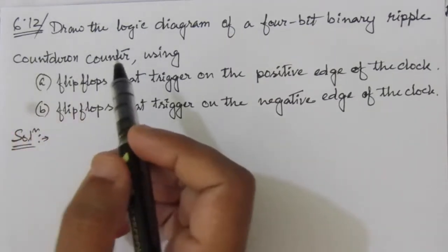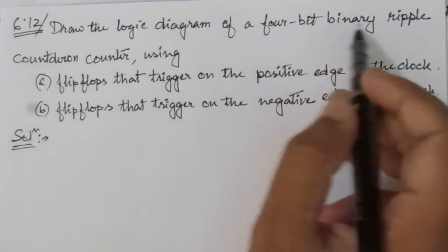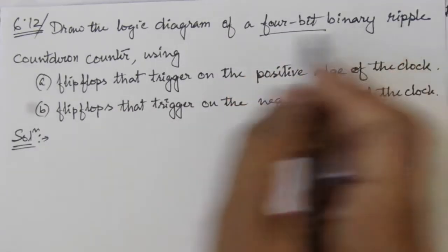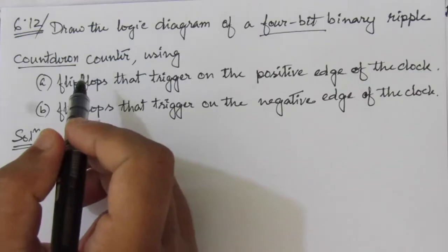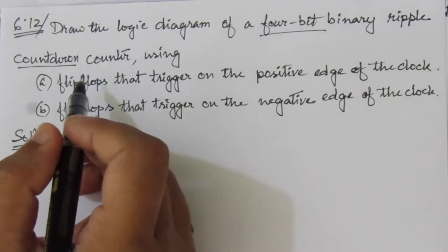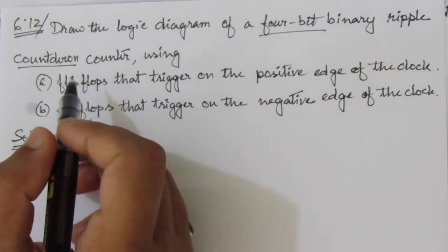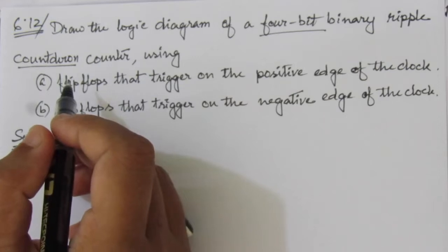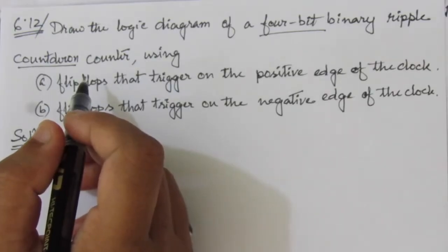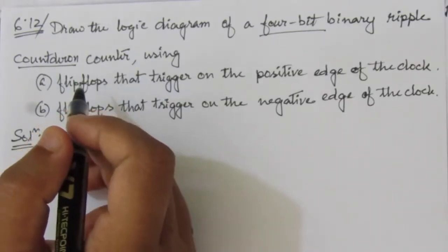The problem is: draw the logic diagram of a 4-bit binary ripple counter. This is a 4-bit binary ripple counter that will count in the reverse direction. That means if it is a 4-bit binary counter, it will count from 15, 14, 13 down to 0. That means it can count 16 pulses, from 15 to 0, making a transition with the arrival of each pulse.